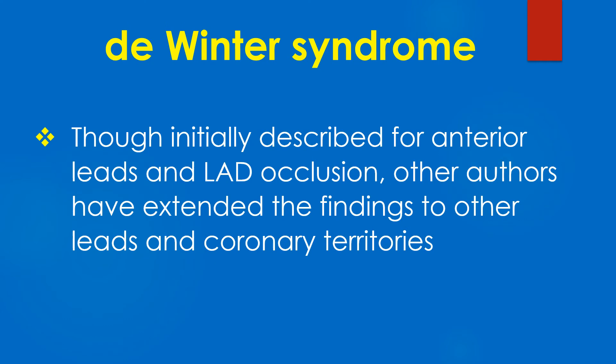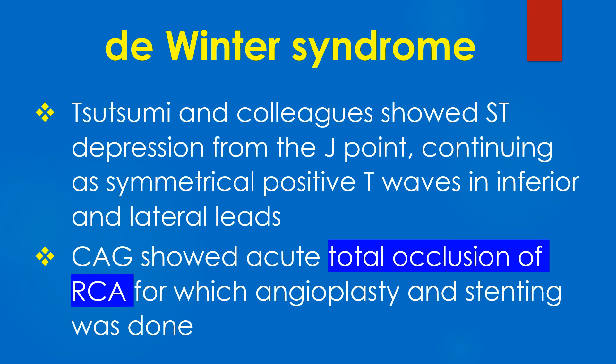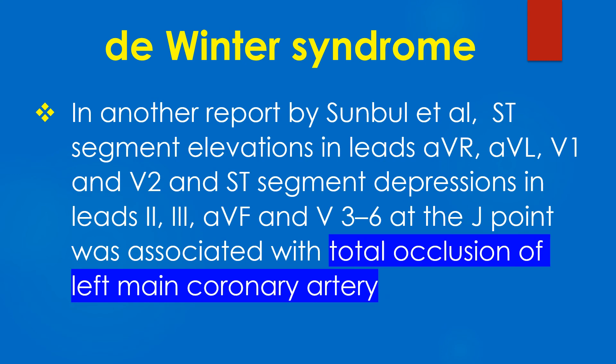Though initially described for anterior leads and LAD occlusion, other authors have extended the findings to other leads and coronary territories. Tsutsumi and colleagues demonstrated ST segment depression from the J point, continuing as symmetrical positive T waves in inferior and lateral leads. Coronary angiography showed acute total occlusion of right coronary artery, for which angioplasty and stenting was done.